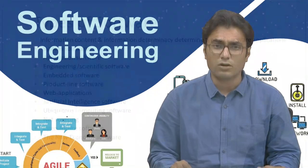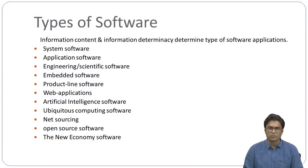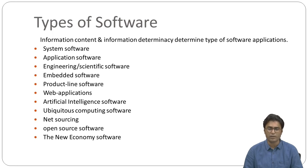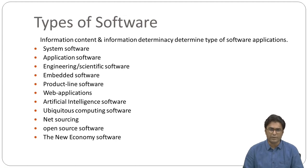Information content and information determinacy determine the type of software applications. Types include system software, application software, engineering and scientific software, embedded software, product line software, web applications, artificial intelligence software, net sourcing, open source software, new economy software, and others.